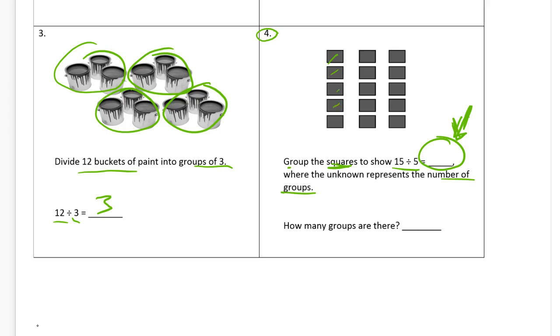One, two, three, four, five. There's five. Five in that group. Five in this group. And five in that group. How many groups are there? There's three, so we can just put a three right there.